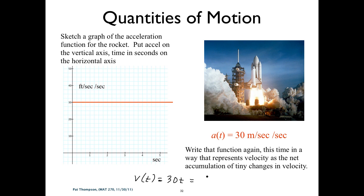The integral from zero to t of 30 du. So this is consistent — net change. We can express it as the accumulation of tiny changes, and that's our integral — our net accumulation function.